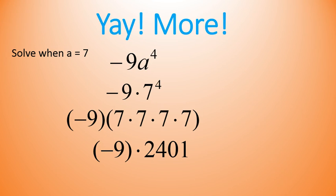That's what you should have gotten. And when you multiply that out, you do get negative 21,609. And it's going to be negative again because negative 9 times positive 2,401 gives you a negative answer.